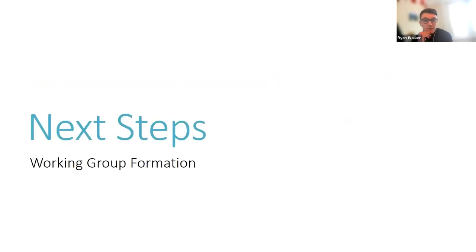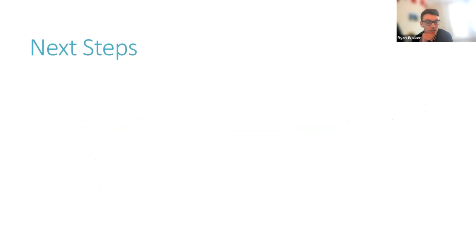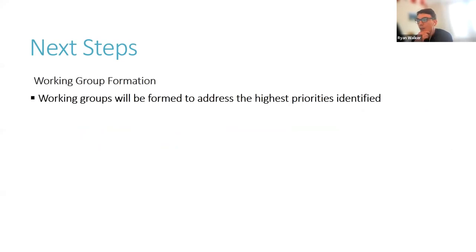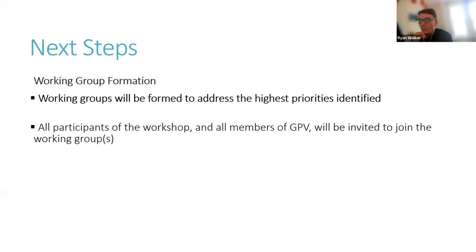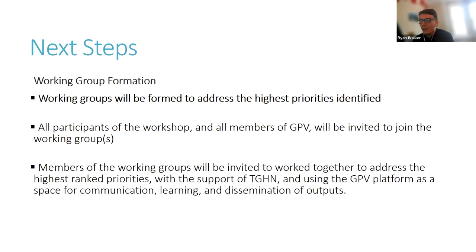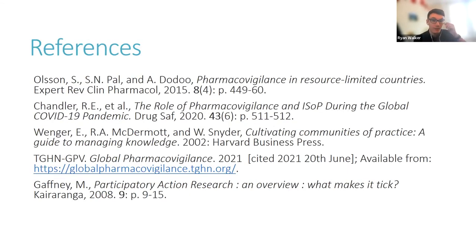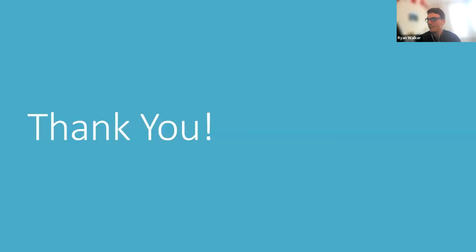The next steps of this work will be to form working groups to address the priorities identified from our survey and carried forward from the workshop poll. The groups will be formed to address the highest priorities identified, and all participants of the workshop and all members of Global Pharmacovigilance — our pharmacovigilance community of practice — will be invited to join the working groups. Members will be invited to work together to address the highest ranked priorities with the support of the Global Health Network, using the Global Pharmacovigilance platform as a space for communication, learning, and dissemination. I appreciate that was a very quick run-through of quite a large and complex project — thank you very much.